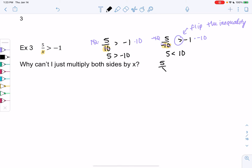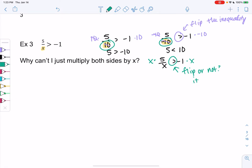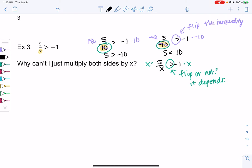Now when I have 5 over x is greater than negative 1 and I multiply by x, the question is, do I flip it or not? It's not a yes or no question. The answer is it depends. It depends if we have a negative or a positive. That's why we're not going to do this because there's too many cases. We can't multiply by x because we don't know if it's positive or negative, and we don't want to deal with multiple cases. This zero trick is much more efficient.